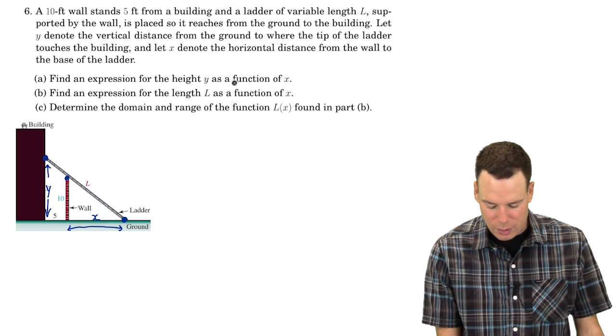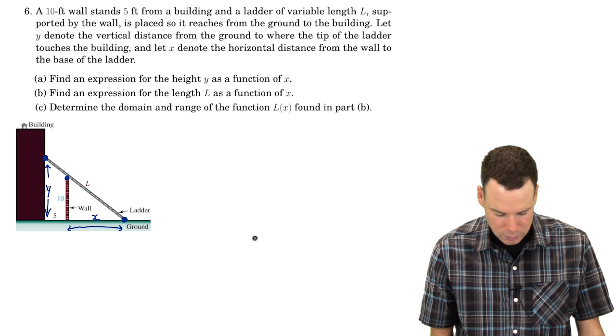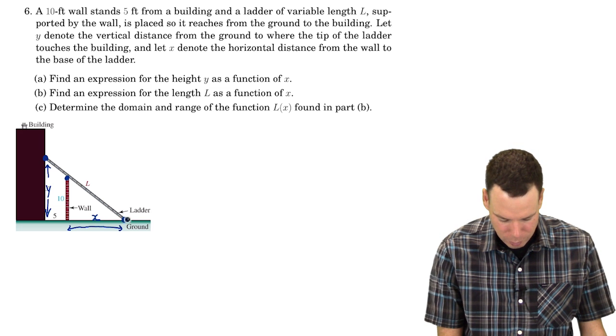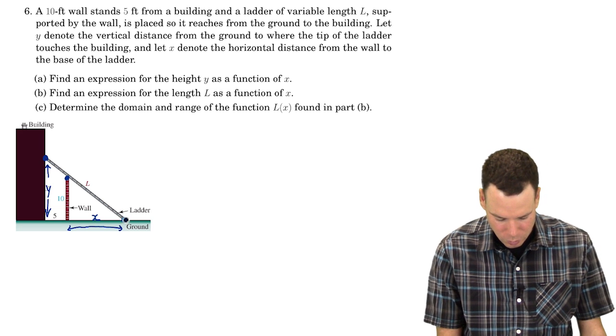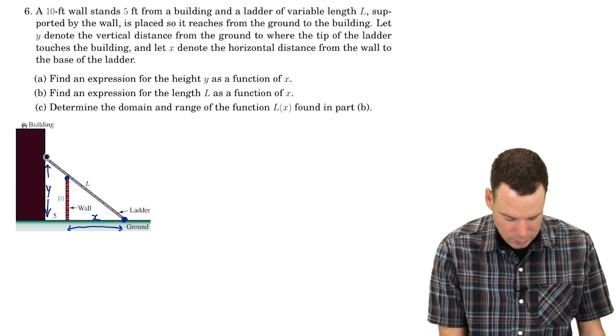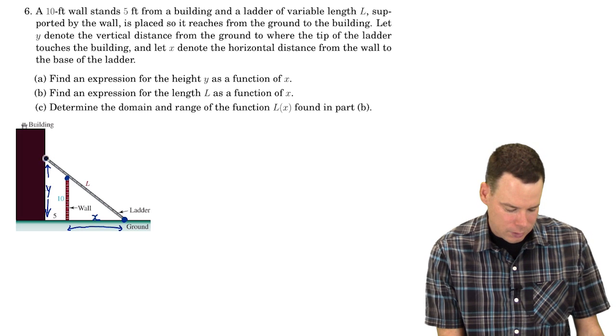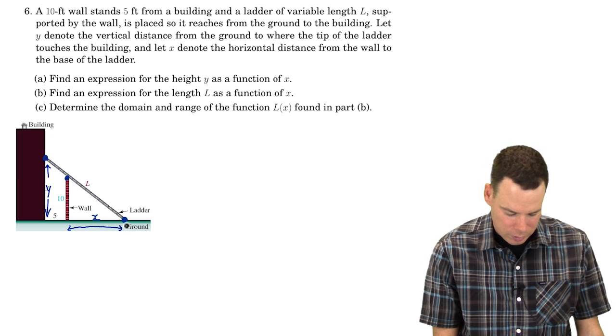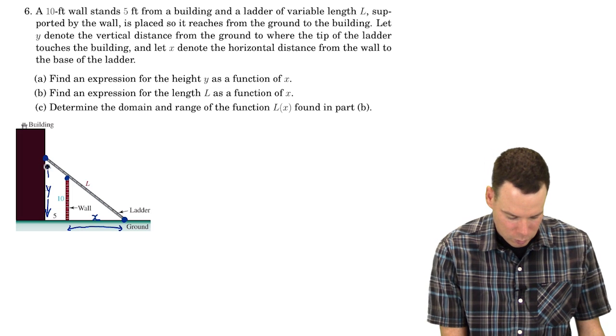Find an expression for the height Y as a function of X. The point here is that if I let the base of the ladder move away or towards the wall, then the point of the ladder that's touching the building will, well, if the base of the ladder moves away, then that point will move down.